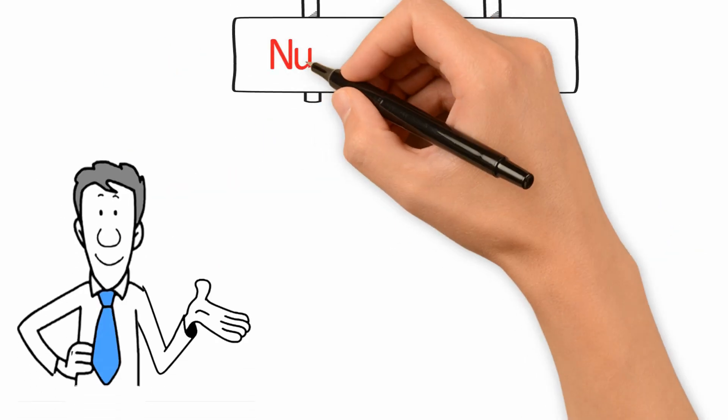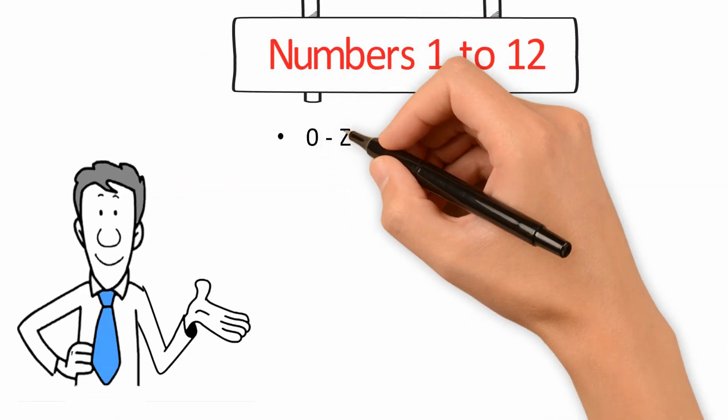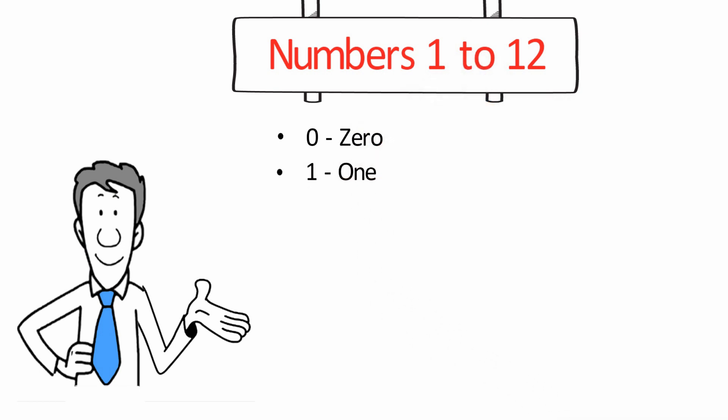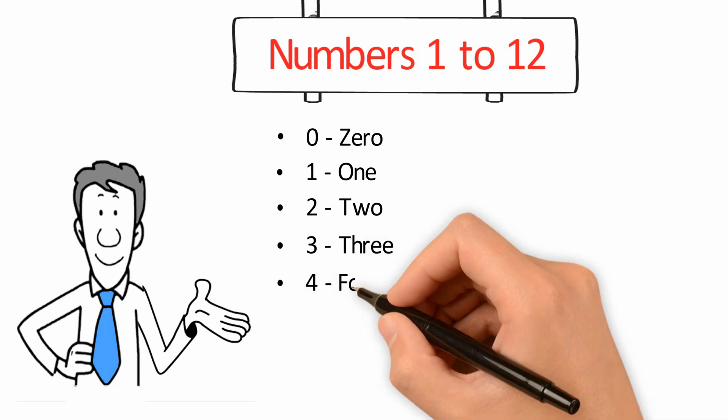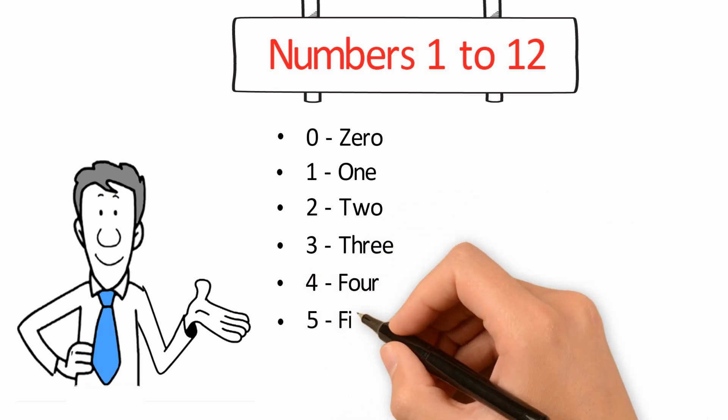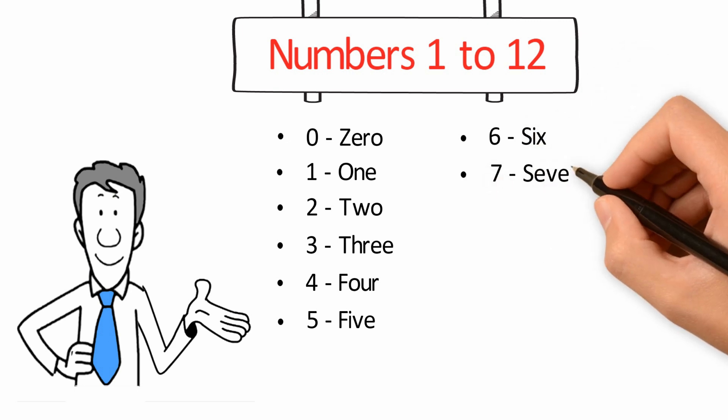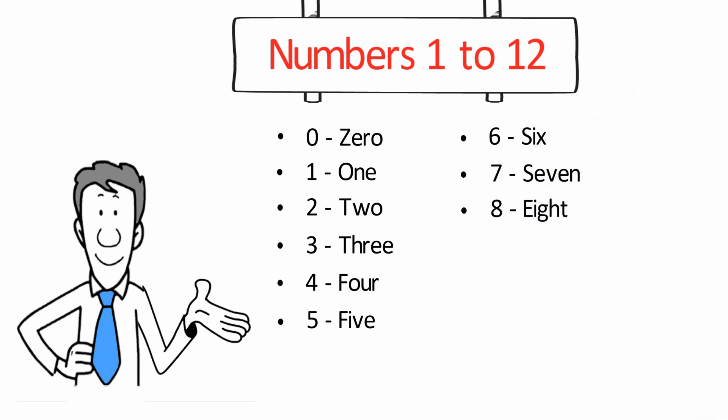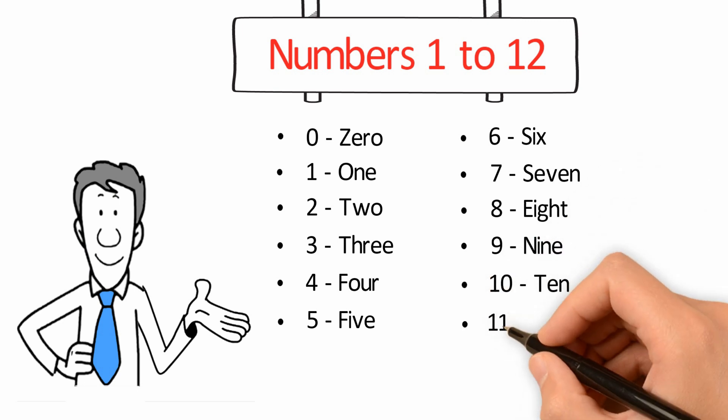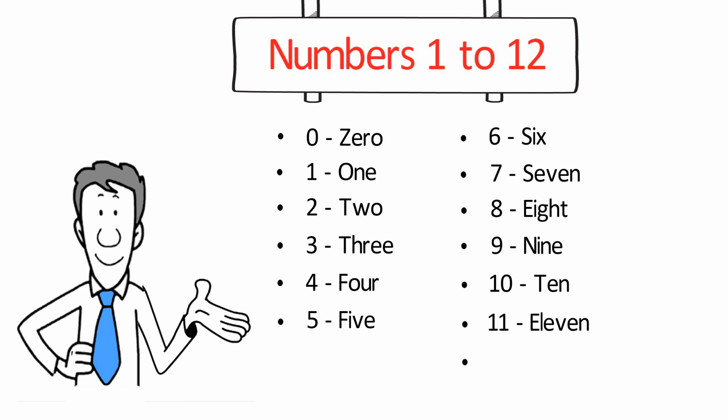Let's start by looking at numbers 1 to 12: 0, 1, 2, 3, 4, 5, 6, 7, 8, 9, 10, 11, 12.